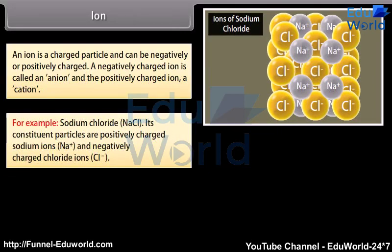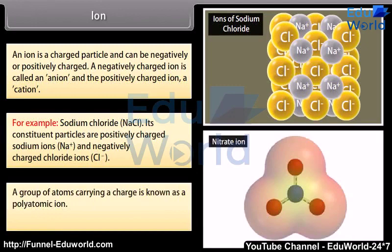For example, sodium chloride: its constituent particles are positively charged sodium ions and negatively charged chloride ions. A group of atoms carrying a charge is known as a polyatomic ion, such as nitrate ion.